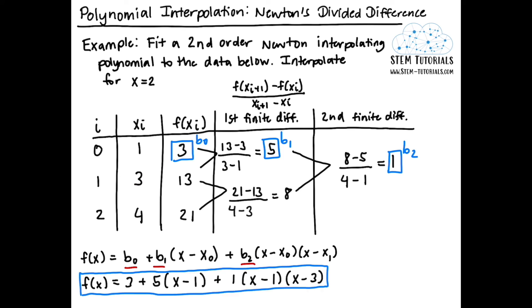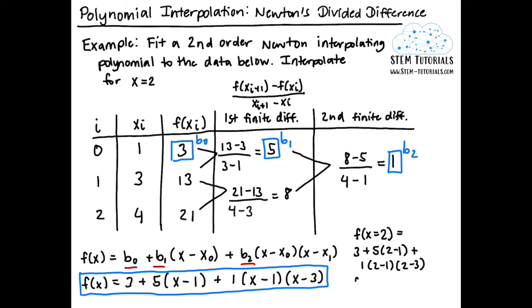As a second step we now need to interpolate for x equals 2. Substituting x equals 2 into our polynomial: f(2) equals 3 plus 5 times (2 minus 1) plus 1 times (2 minus 1) times (2 minus 3). This gives us f(2) equals 7. So when x equals 2, our y or f(x) value equals 7.